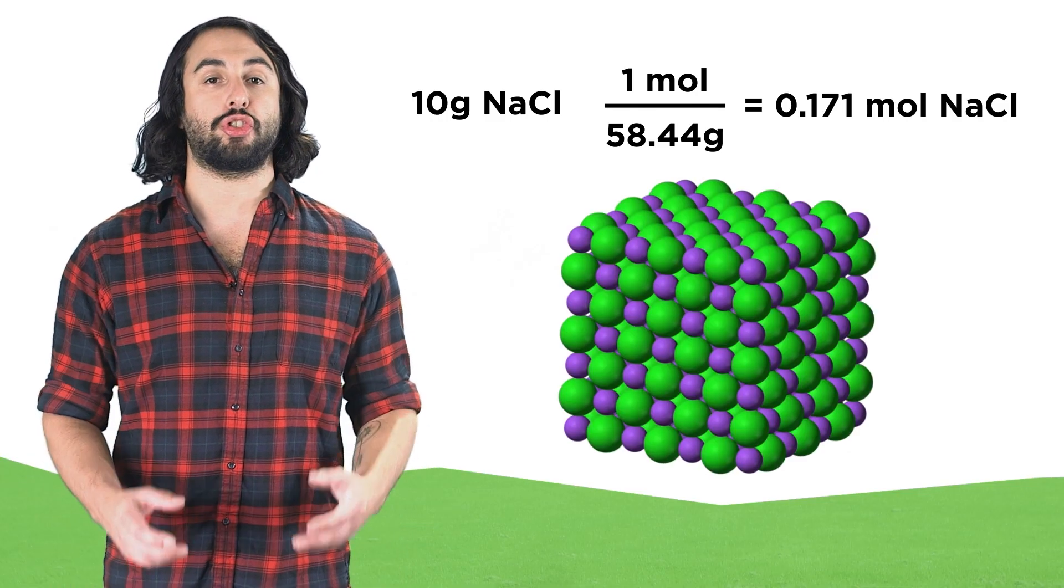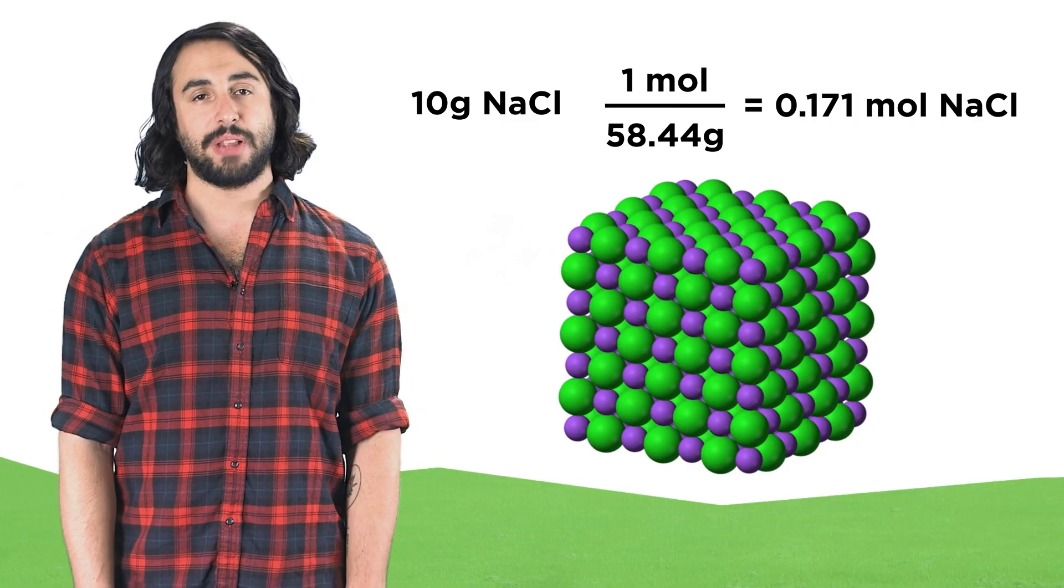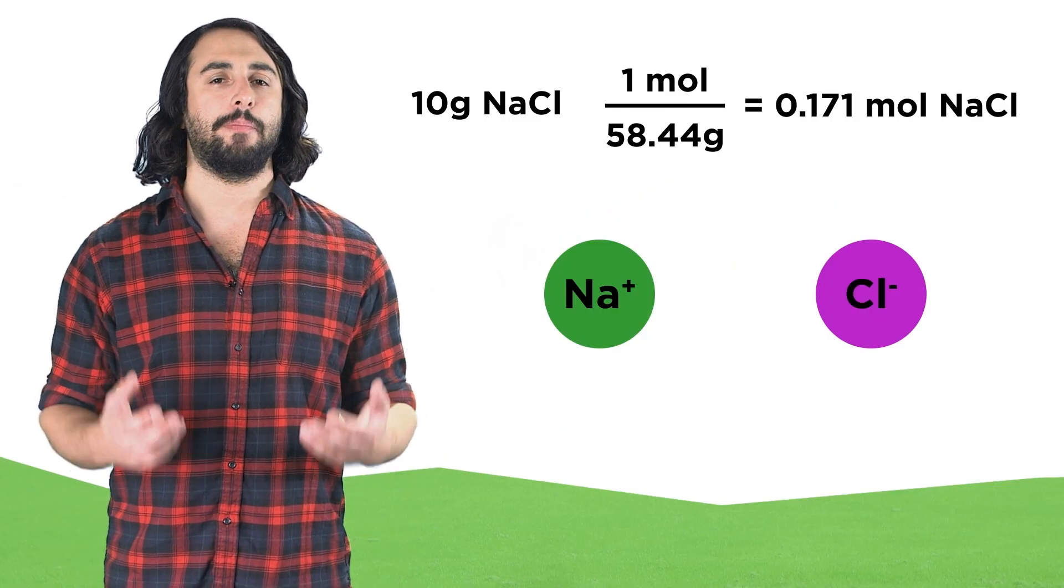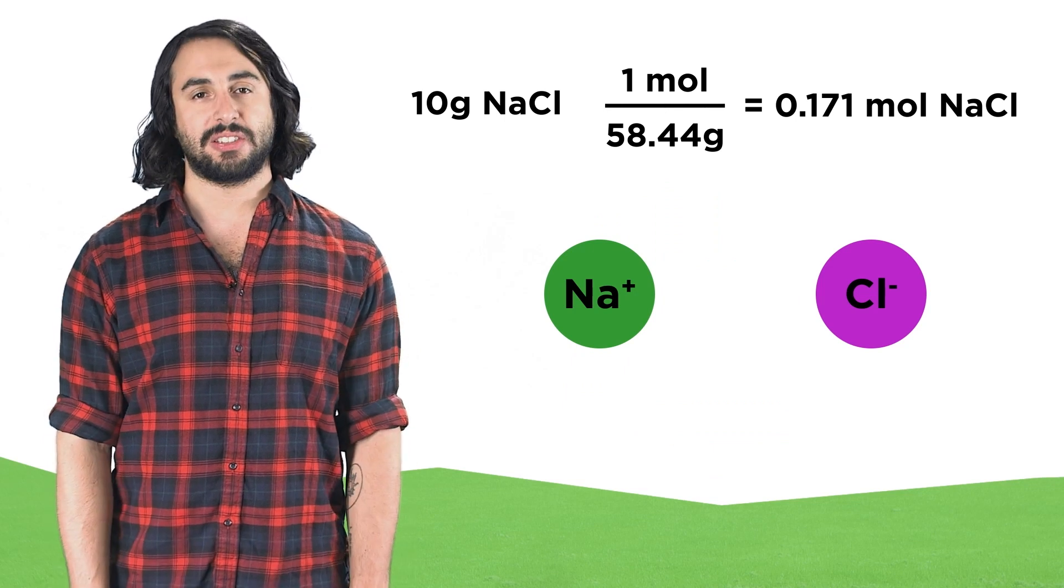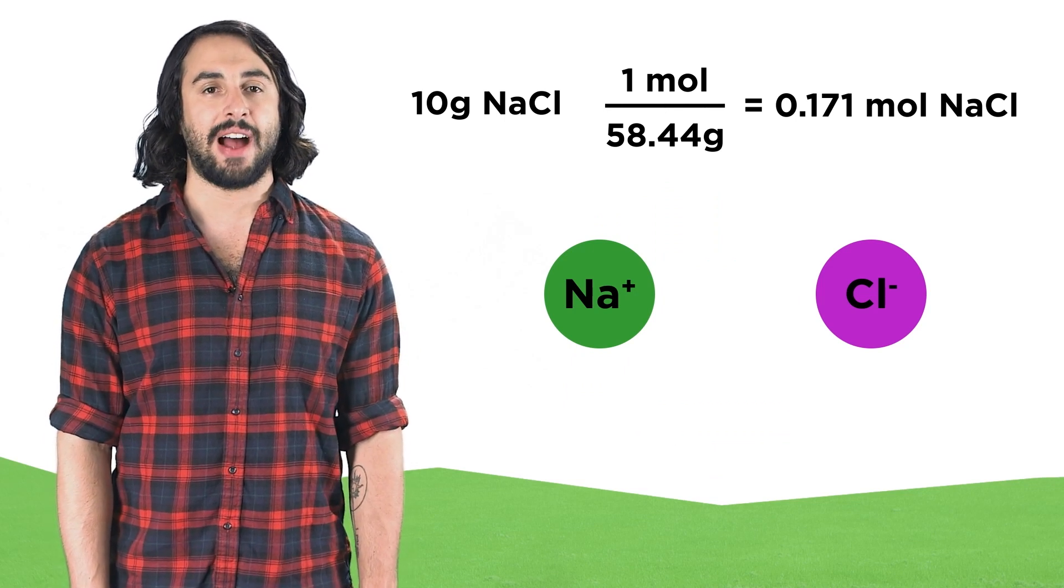Now we also know that sodium chloride is a strong electrolyte, and if we place it in precisely one liter of water, it will completely dissociate, forming sodium ions and chloride ions.